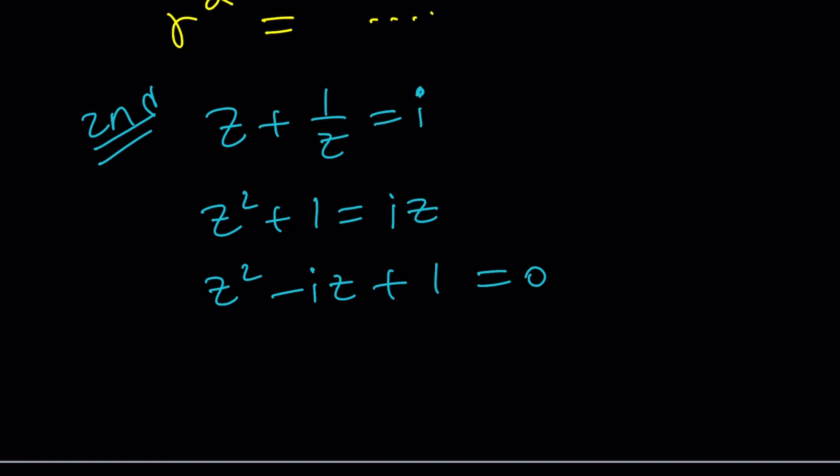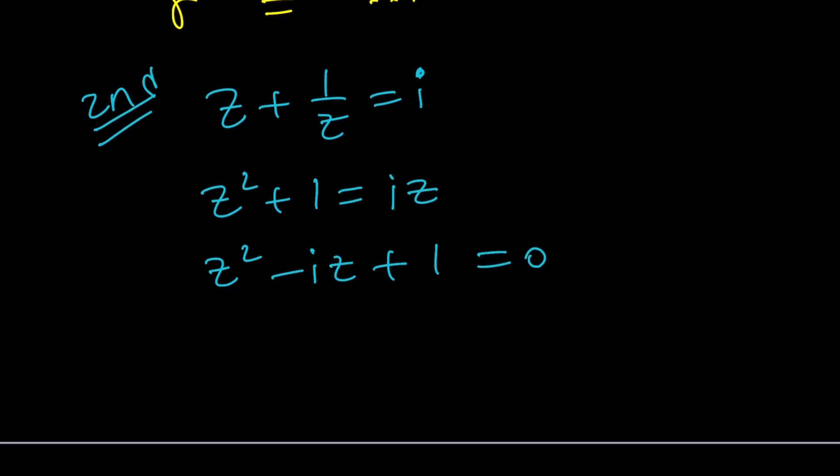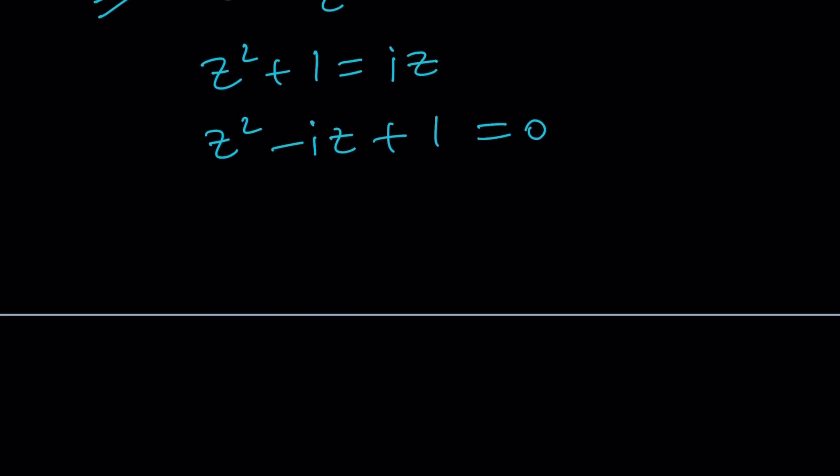Here's one thing to keep in mind. If Z is a real number, obviously Z plus 1 over Z cannot be complex or imaginary, right? Anyways, so how do you solve it? The easiest way, the quadratic formula.